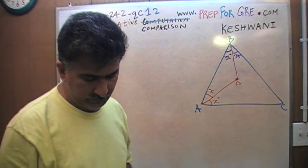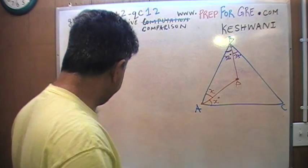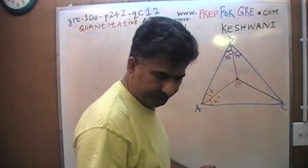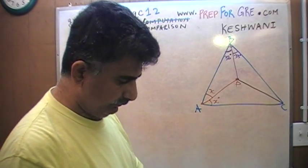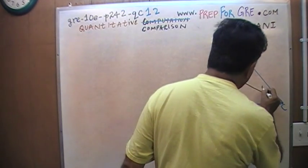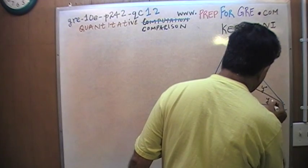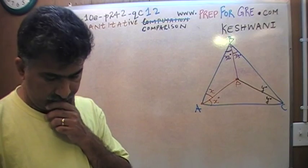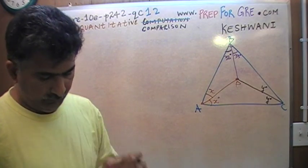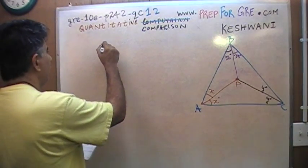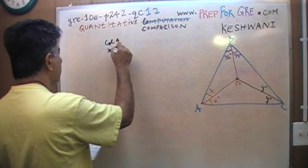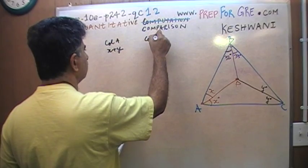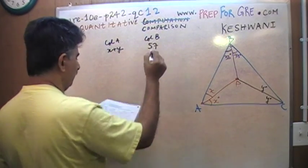I'm also told that PC — this is Y degrees. So therefore this must also be Y degrees. What's the question asking? They want you to compare quantity X plus Y versus 57.